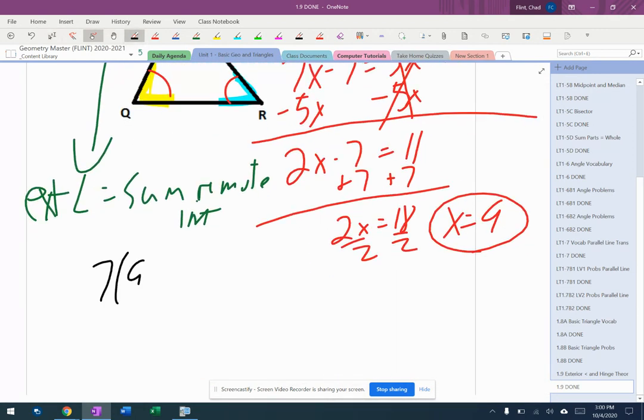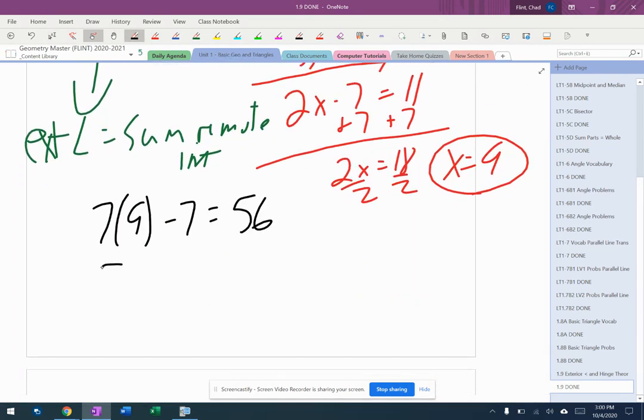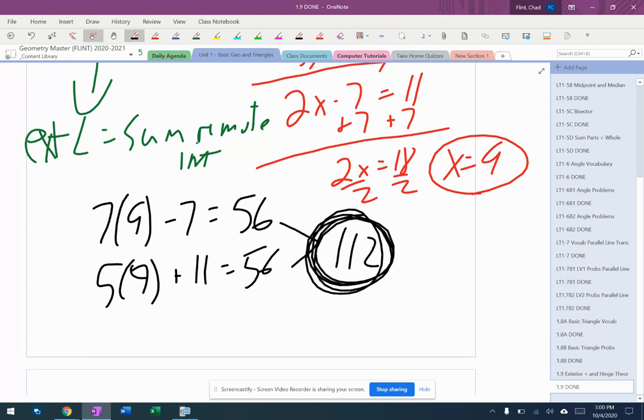So it's 7 times 9 minus 7, which is 56. Blue is 5 times 9 plus 11. 56. That should make sense because they're supposed to be the same.